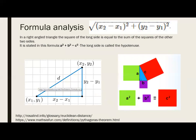To recap: the formula is the square root of (x2 - x1)² + (y2 - y1)². In a right-angle triangle, the square of the longest side equals the sum of the squares of the other two sides. In our case, the long side is d, and the two shorter sides are (y2 - y1) and (x2 - x1).